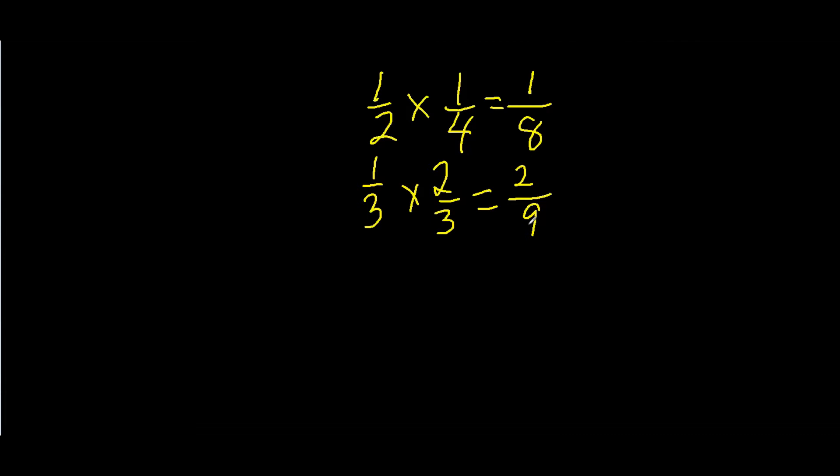The next one, number's a little bit bigger, 3 fifths times 5 sixteenths. 5 times 3 is 15. 5 times 16 is 80. So, can we reduce that down by 5? 15 divided by 5 is 3, 80 divided by 5 is 16. So, 15 eightieths is the same as 3 sixteenths.